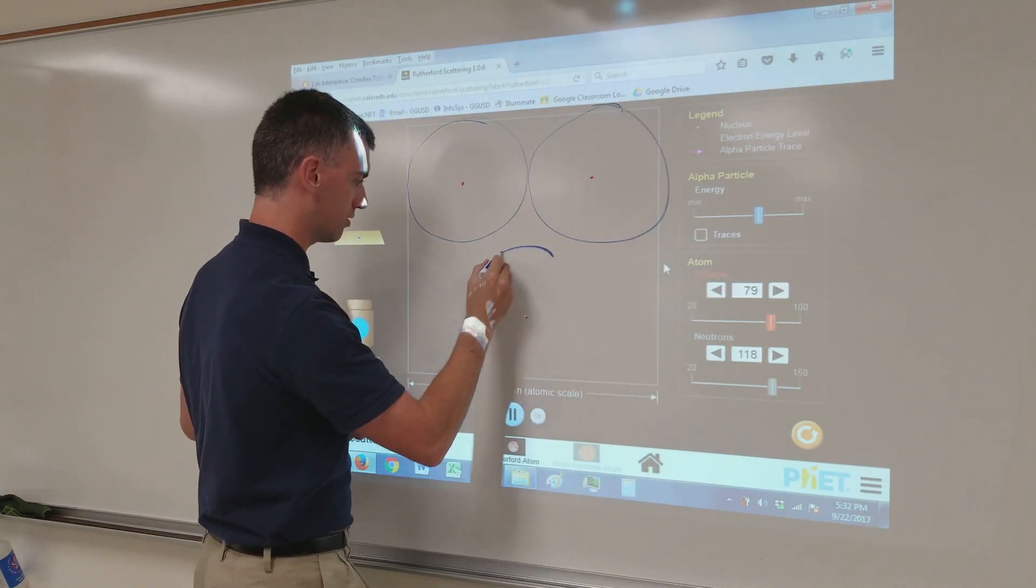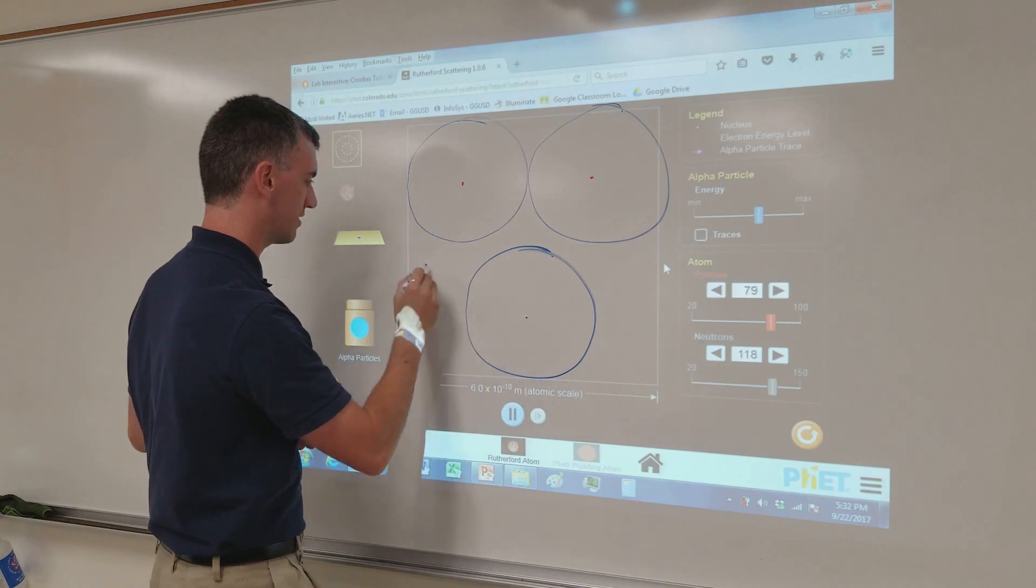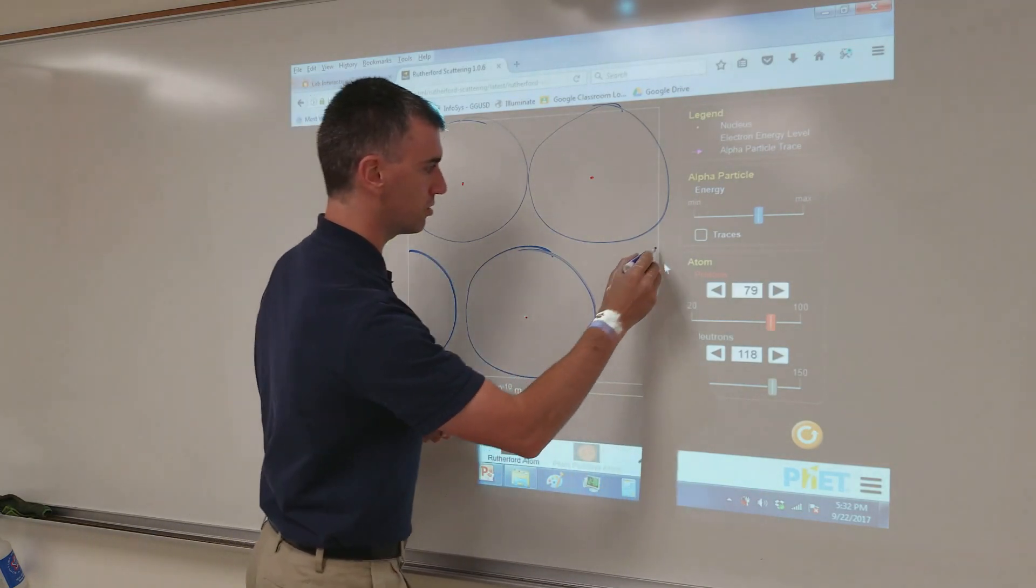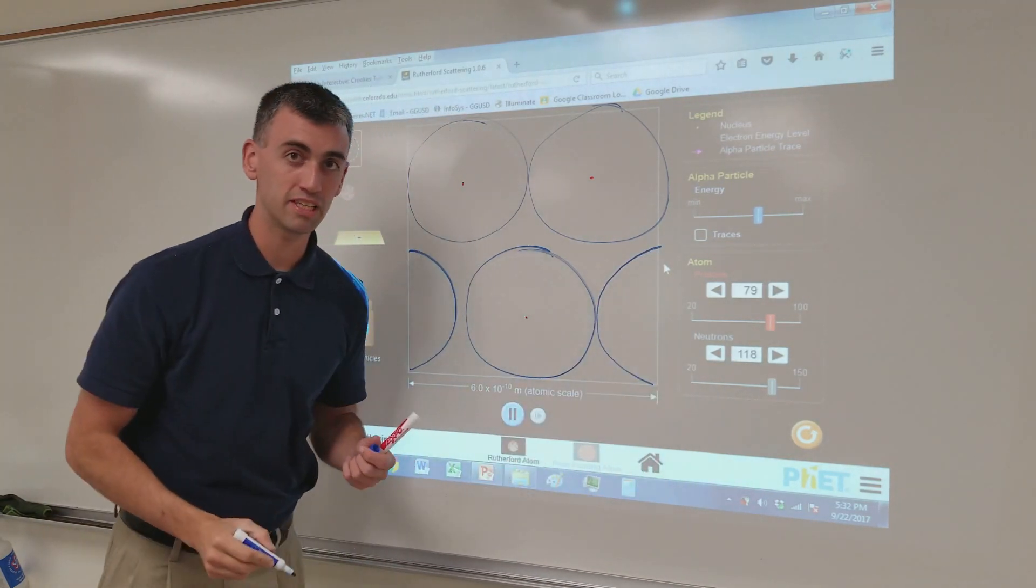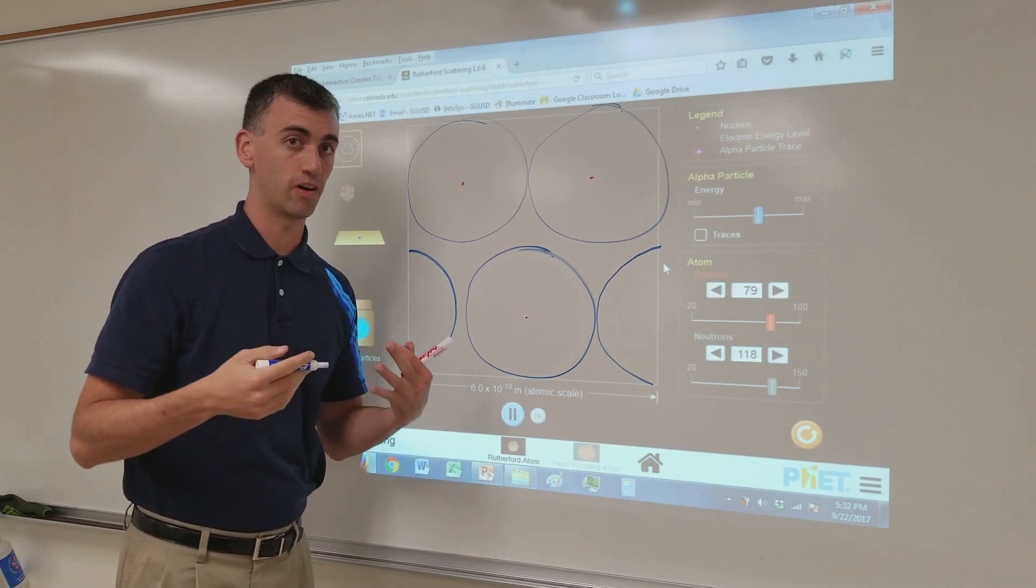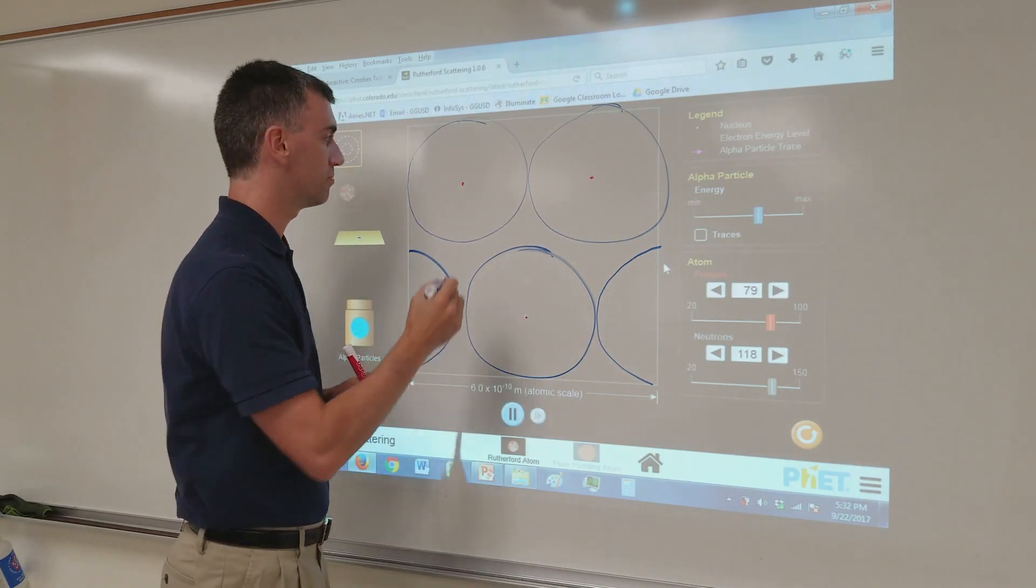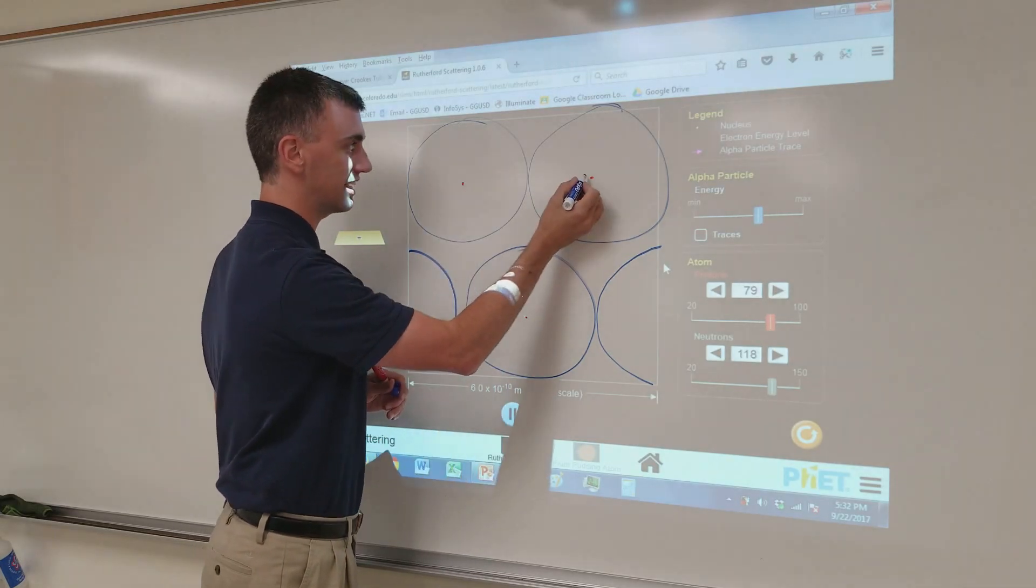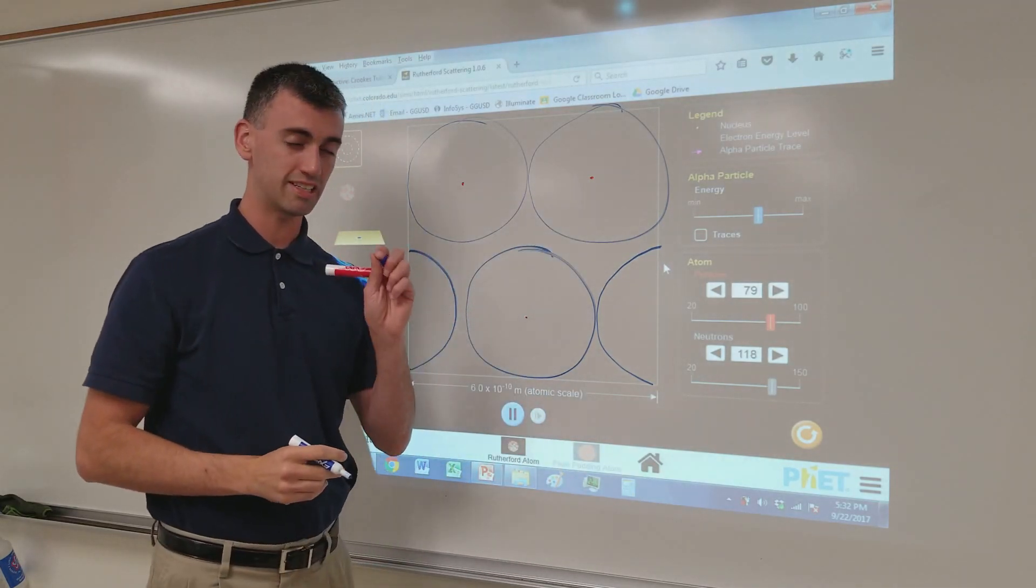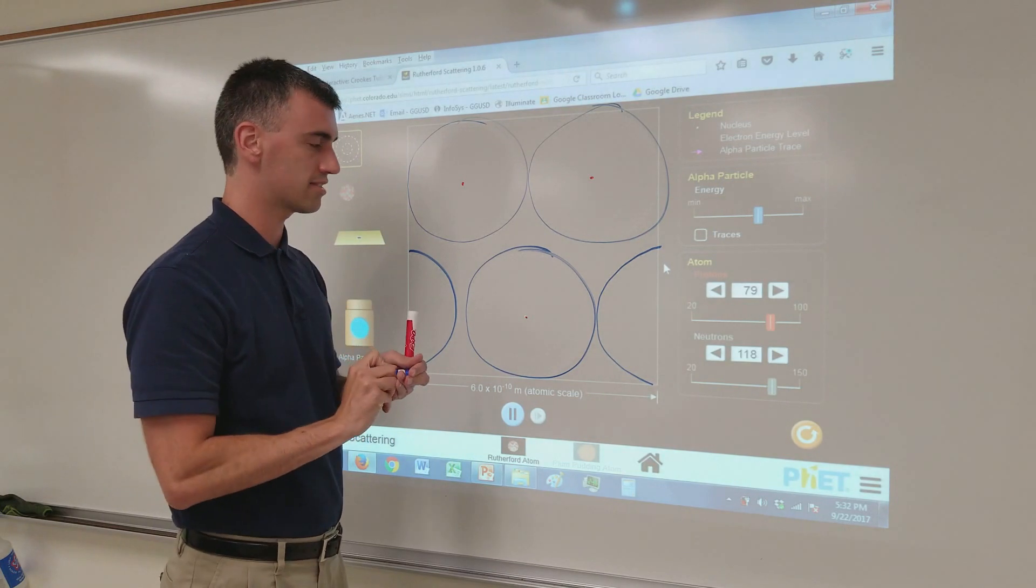And what's also hard to see is the actual atom itself is represented by these larger circles here. What he deduced was that the atom is composed overwhelmingly of empty space. Most of an atom's volume is nothing. The vast majority of its density, of its mass, is in that tiny little nucleus that occupies only a teeny tiny percent of its volume.